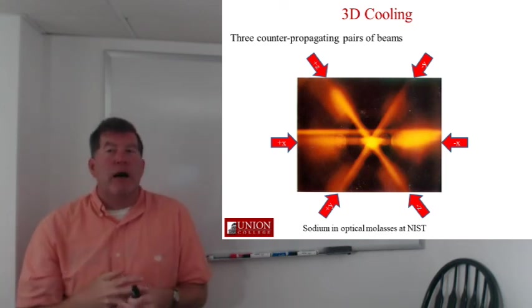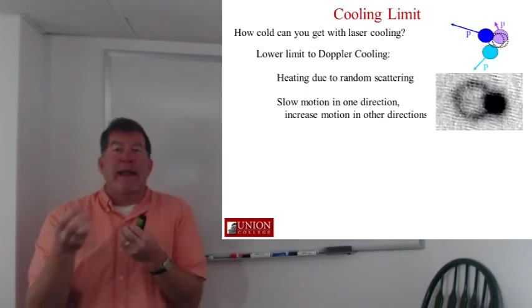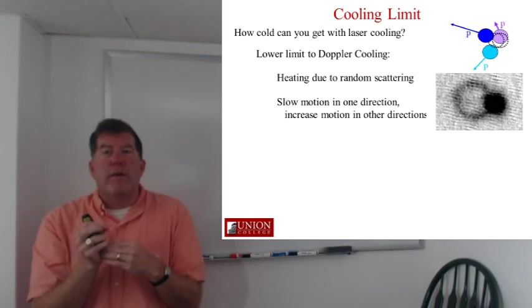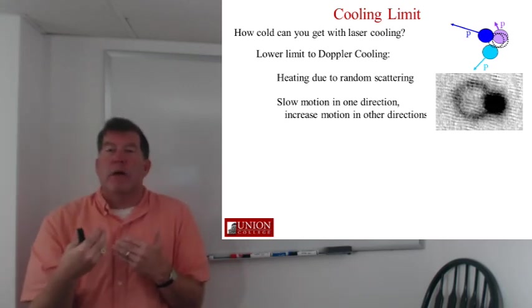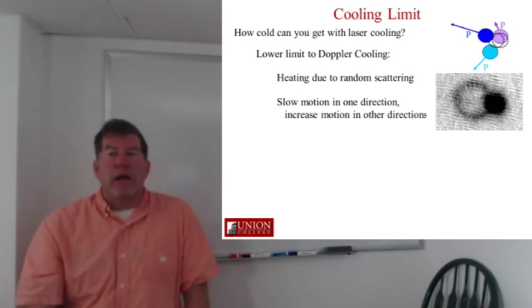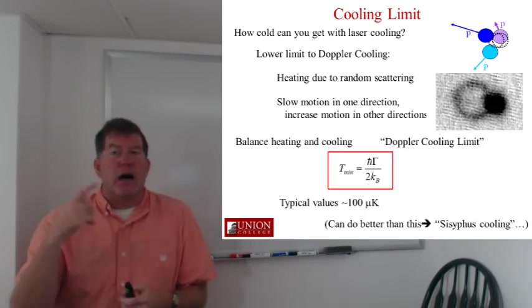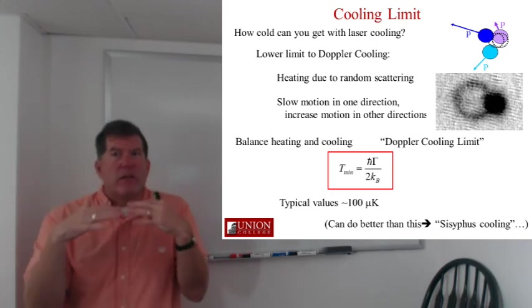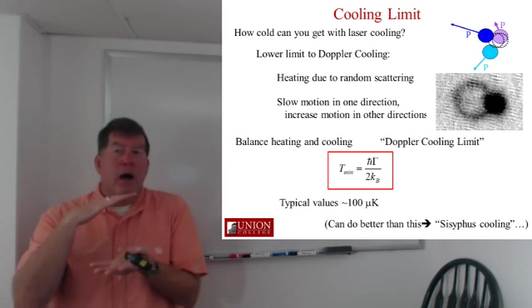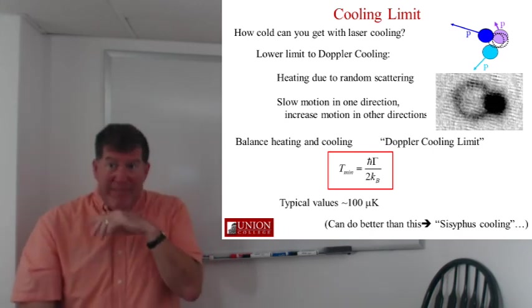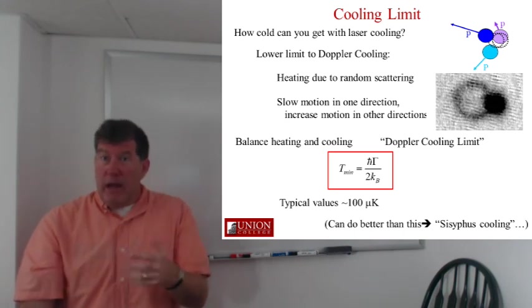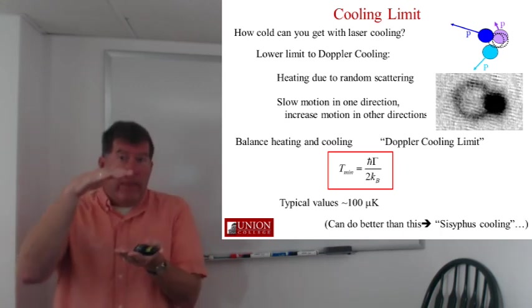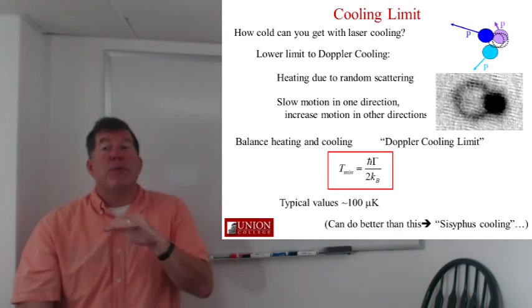How cold can we get with this? Well, there's a limit to this Doppler cooling phenomenon, which comes from the fact that you still have this random scattering. Every time the atom absorbs a photon and slows down, it's going to re-emit that photon and get a kick in a random direction. So you're slowing the motion in one direction, but you're increasing motion in some other direction after the kick from the emitted photon. You can kind of balance these two out against each other. And what you find is that there's a minimum temperature that depends on the scattering rate. And for typical atoms, this comes out around 100 microkelvin. So that's kind of the limit of what you can do with laser cooling is to get atoms down to temperatures of about 100 one millionths of a degree above absolute zero. Now, that's about a factor of 1,000 hotter than what we want to do this tunneling experiment, but this is an excellent first step.